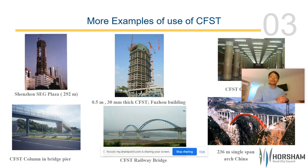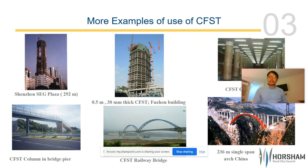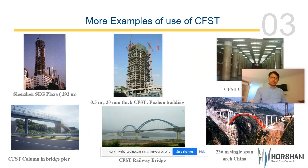The advantage of CFST in mountainous areas is that it is very easy to transport the thin tube, and then producing concrete on site is much easier than transporting heavy precast material.